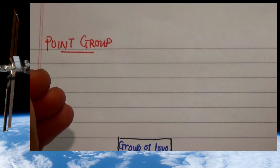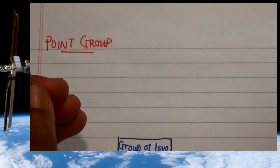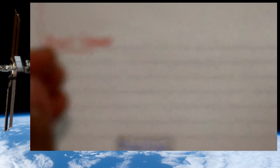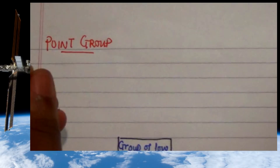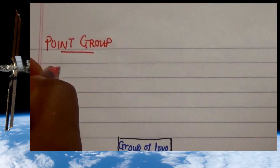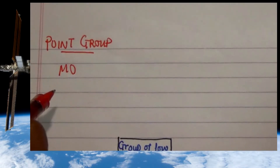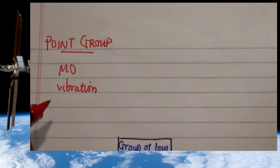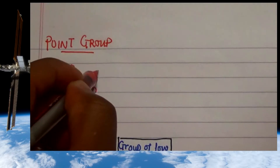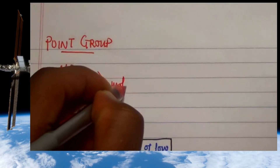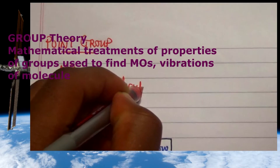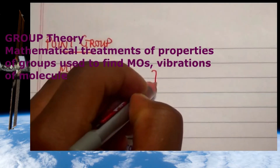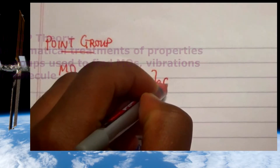Hello everyone, welcome to my channel. We're going to be looking at the point group, which is a molecule's set of symmetry operations and a mathematical treatment of the properties of groups used to find either the MOs (molecular orbitals) or vibrations, which are compressions of bonds, applied to a particular molecule. This combination of using point groups to understand the MOs and vibrations of a molecule is called group theory.